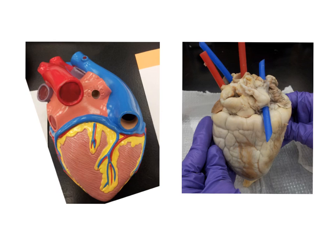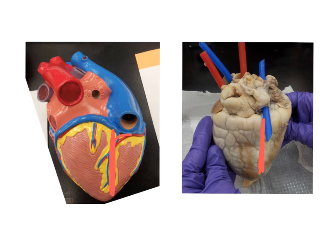Here's a look at the posterior or the dorsal surface of the heart. Here you can see that the coronary artery is not going at an angle but more straight up and down, so you can really tell the difference from the anterior and the posterior. This branch is the posterior interventricular branch of the right coronary artery. So again: anterior, ventral, posterior, dorsal.